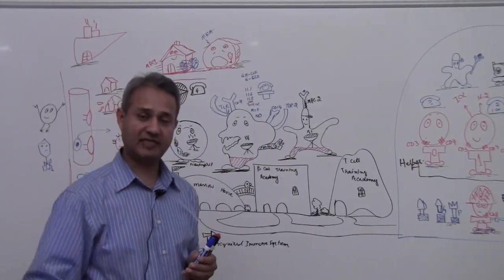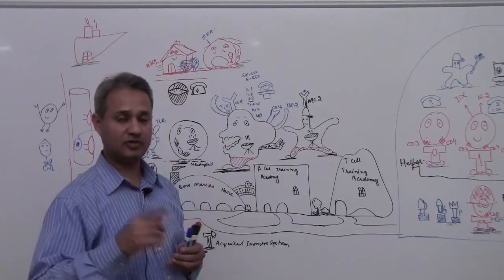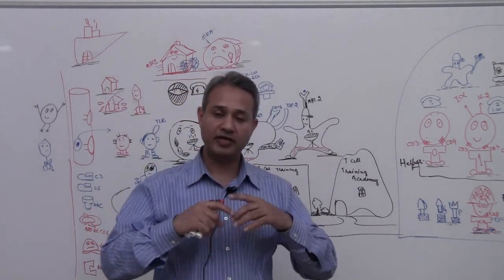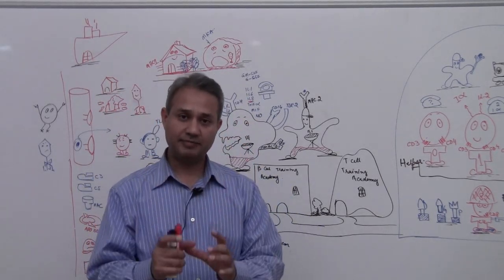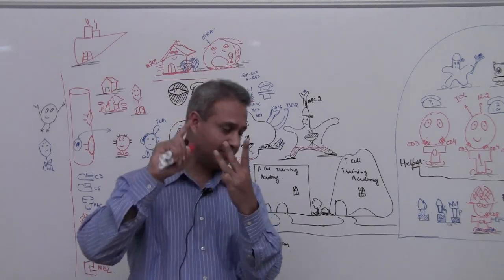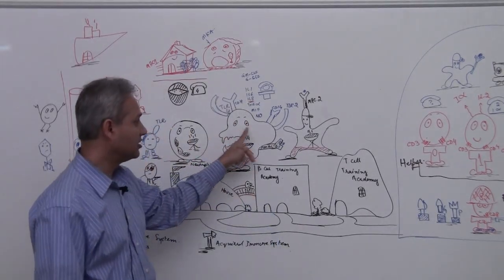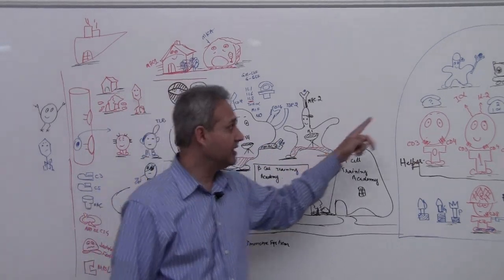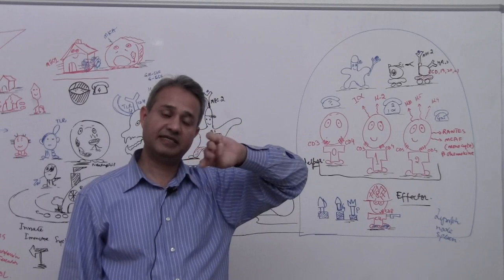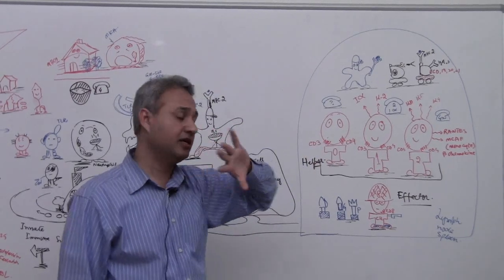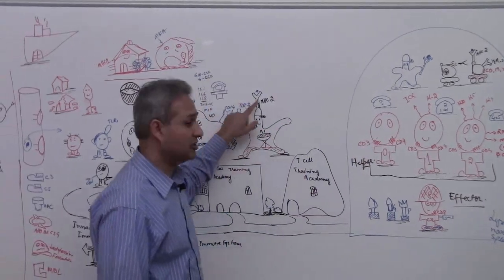Professional antigen presenting cells. Remember, all of our nucleated cells have got MHC1 on them, but professional APCs, there are only three professional APCs: macrophage, dendritic cell, and B cell. These three are professional antigen presenting cells. What does that mean? They stick the antigen on the MHC2.